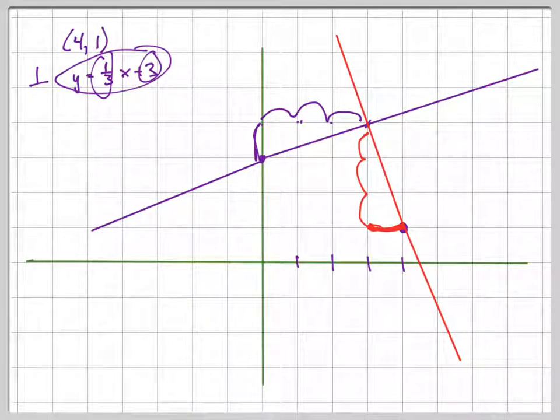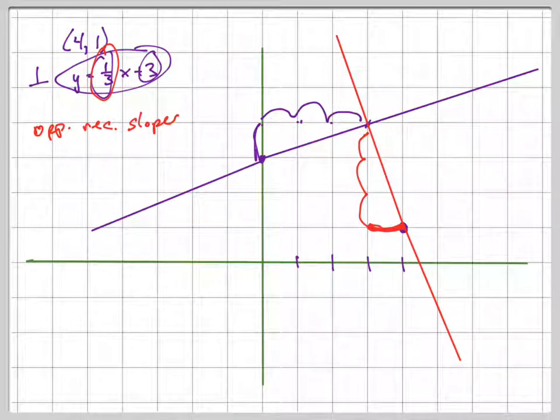So what do we notice about the picture? This is exactly what I was trying to point out to you: perpendicular lines have negative or opposite reciprocal slopes. If the slope of this line was positive 1/3, then the slope of the red line is negative 3/1.